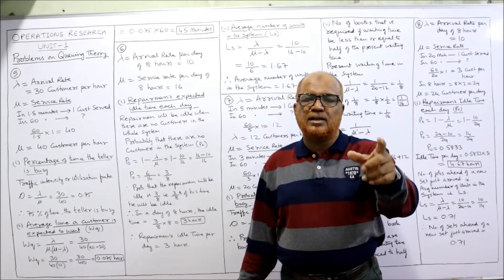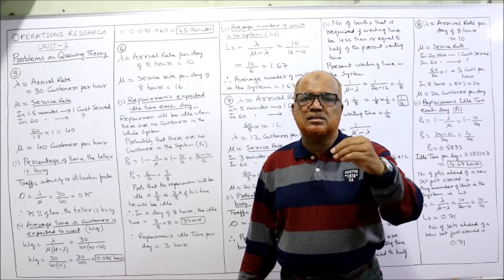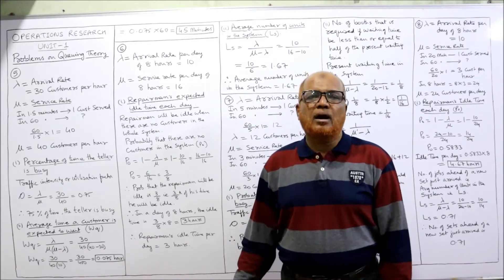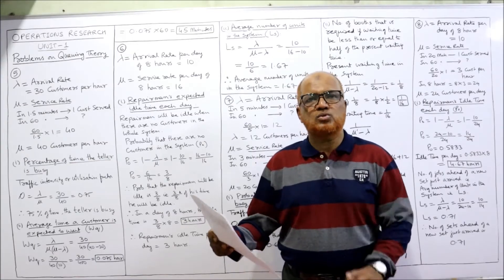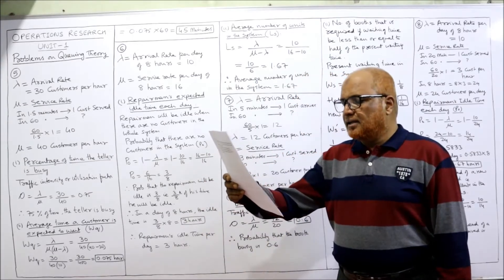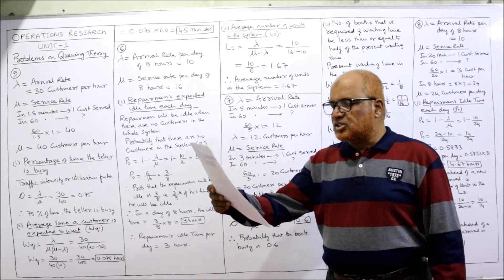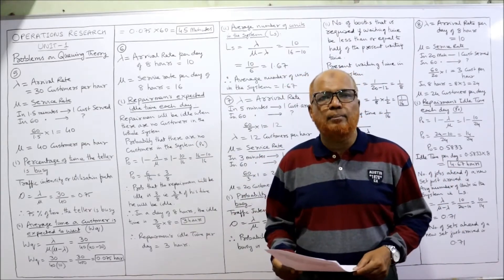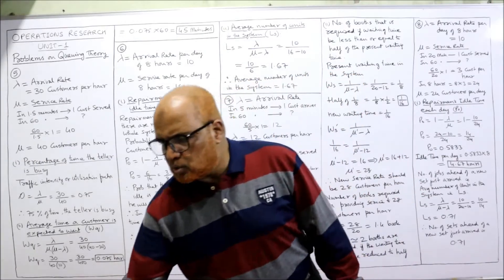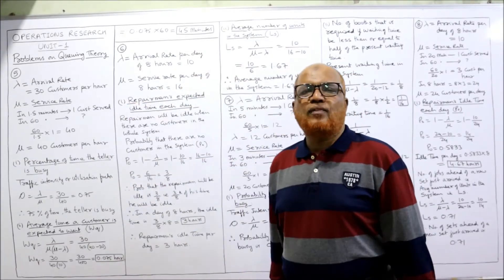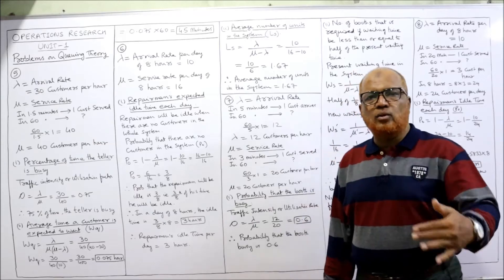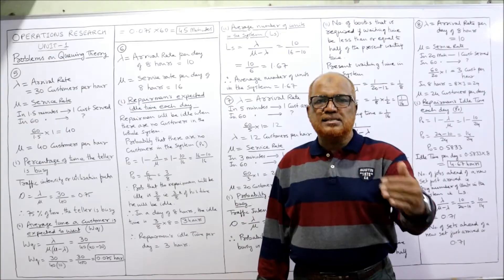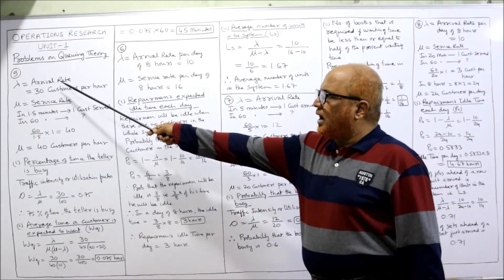The questions are: calculate the percentage of time the teller is busy — that means utilization factor, traffic intensity, or percentage of time the server is busy, which is Rho. The formula is Rho = lambda divided by mu. Also calculate the average time a customer is expected to wait in the queue, which is Wq. Before finding any answer, we need lambda and mu — the arrival rate and service rate.